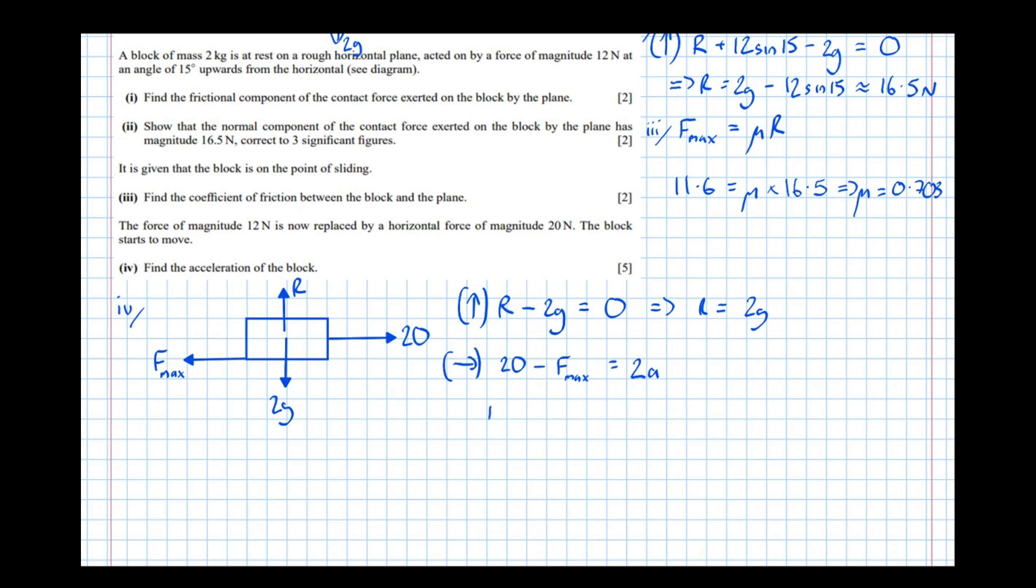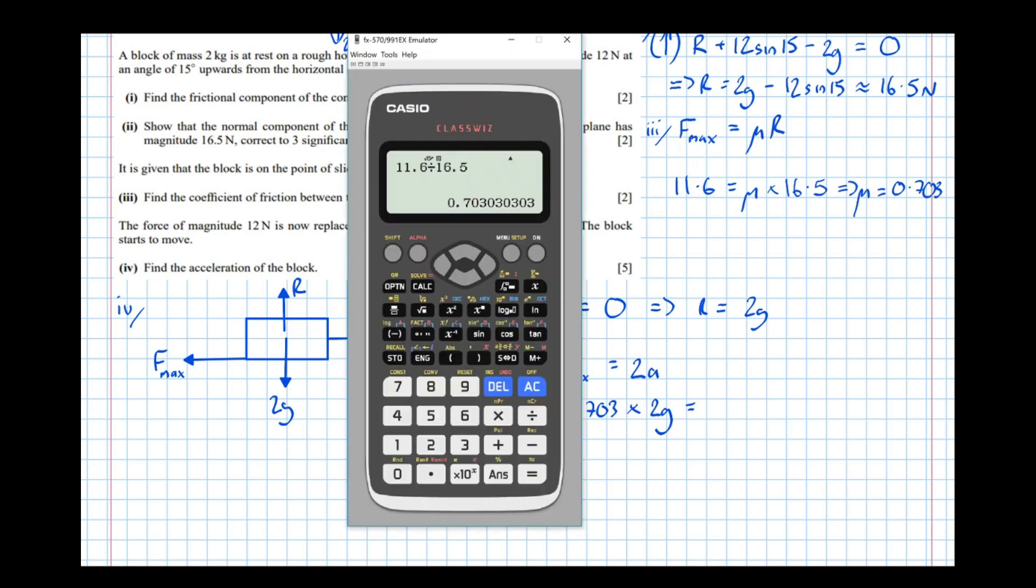We also know F_max equals μR. And we worked out the value of the coefficient of friction in the previous part. So F_max equals μ, which is 0.703, times the normal reaction, which we found out to be 2g, which is 13.7788.